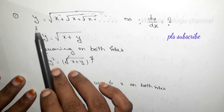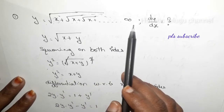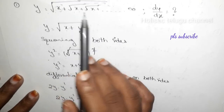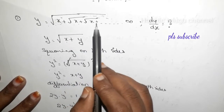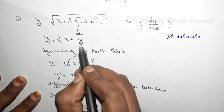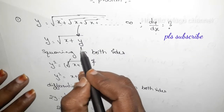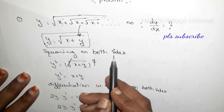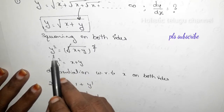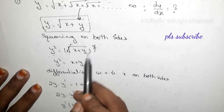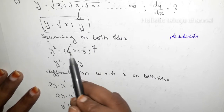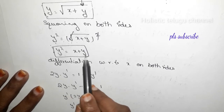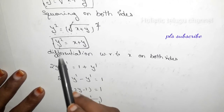So to summarize: y equal to root over x plus root over x plus root over x and so on to infinity — find dy/dx. We write y equal to root over (x plus y), square both sides to get y squared equal to x plus y, then differentiate.